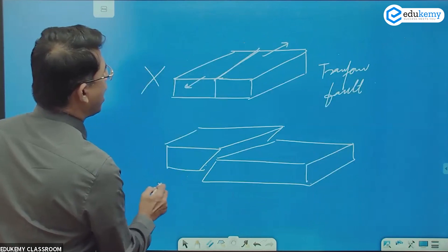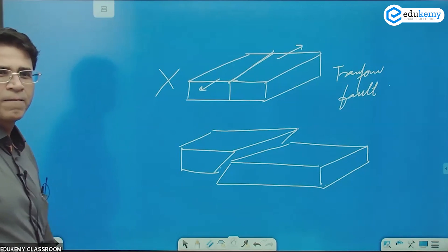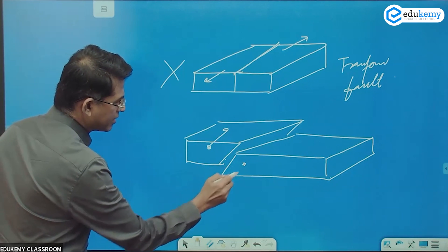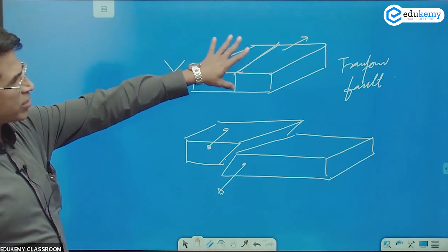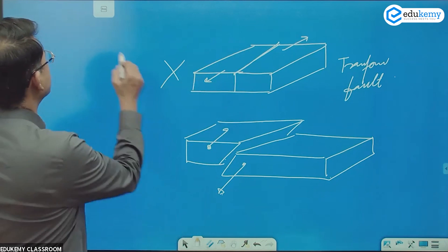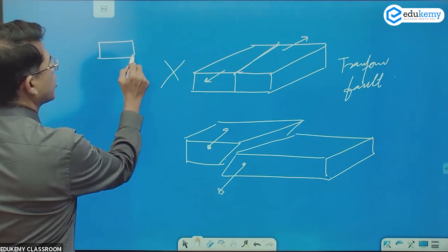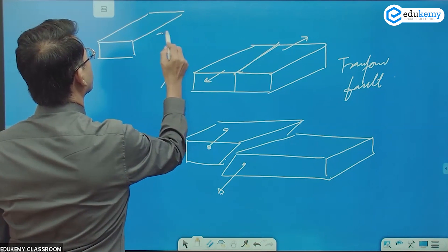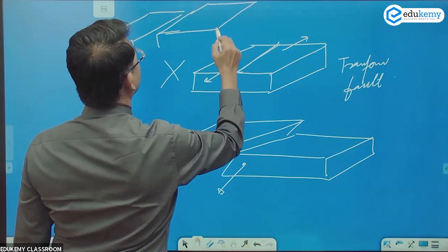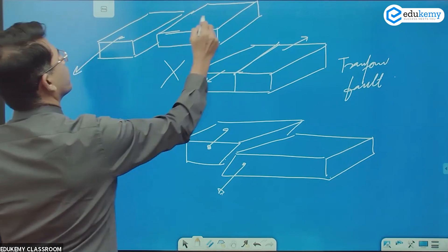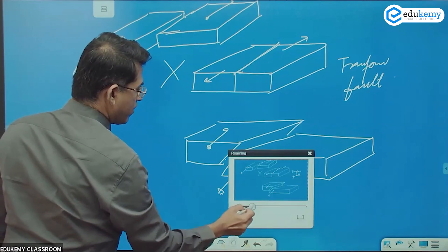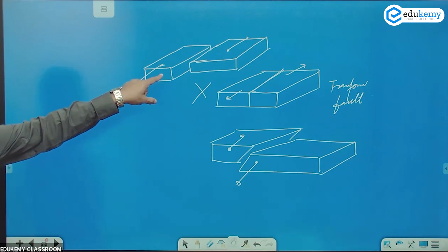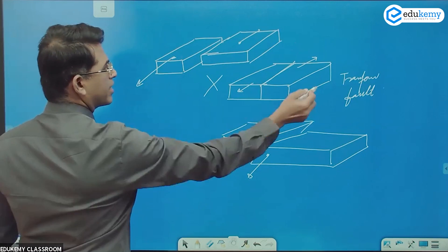Now, are these two the same things? In one case, this has gone above and this has come down. In the other case, the slippage is along the surface — this will not create mountains. This is the transform fault — there is no vertical slip.